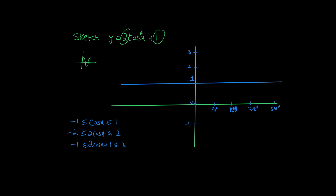You can plug 2cos(x) + 1 into your calculator for values at 90, 180, 270, and 360 degrees. The curve starts at 3, reaches the mean position at 90 degrees, goes to -1 at 180 degrees, returns to the mean at 270 degrees, and reaches 3 again at 360 degrees. That is the general sketch of y = 2cos(x) + 1.